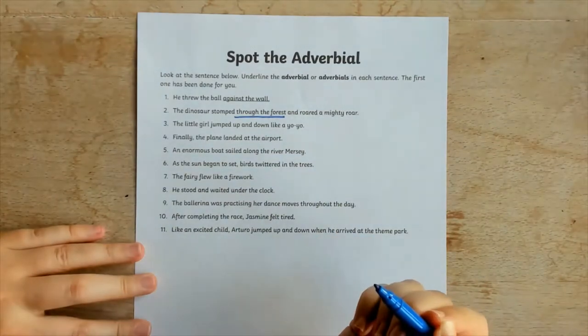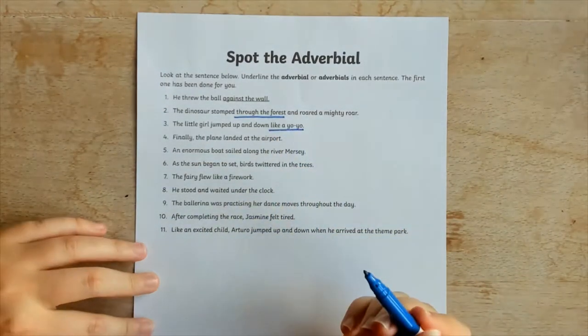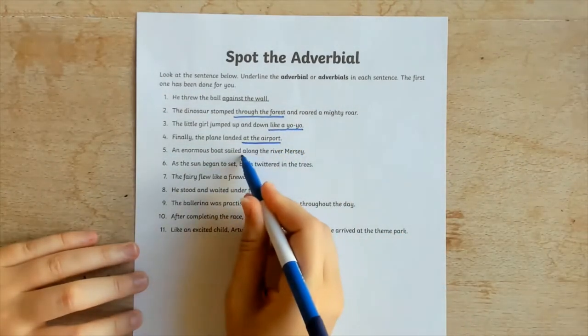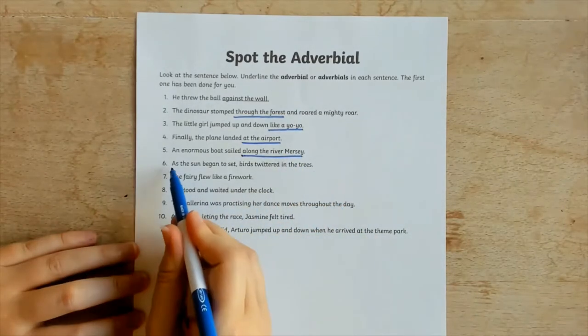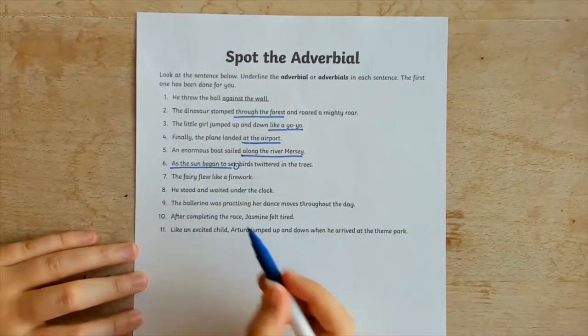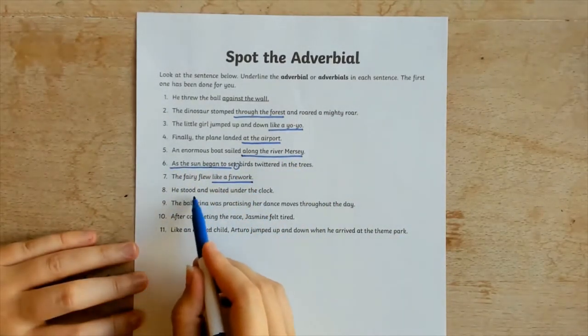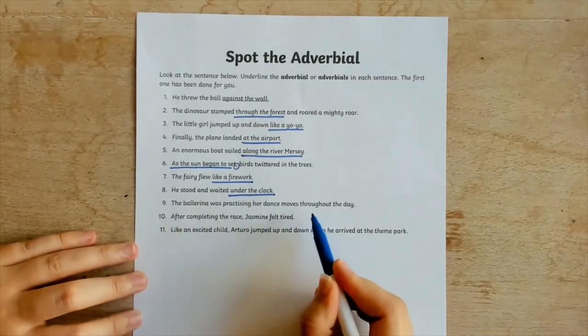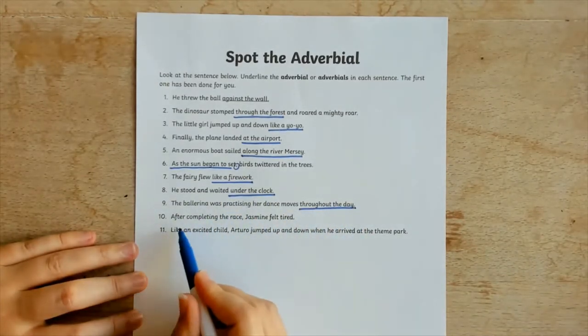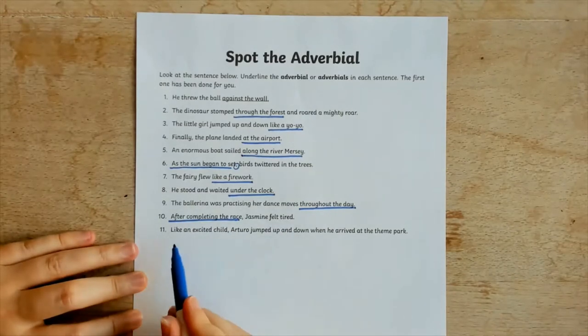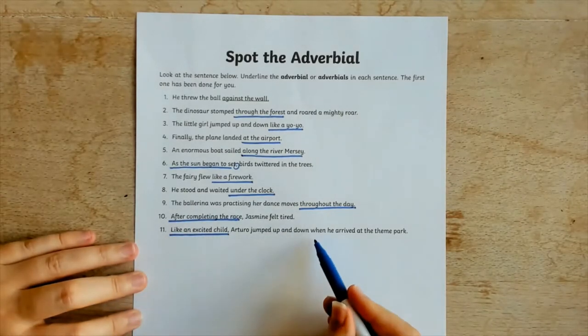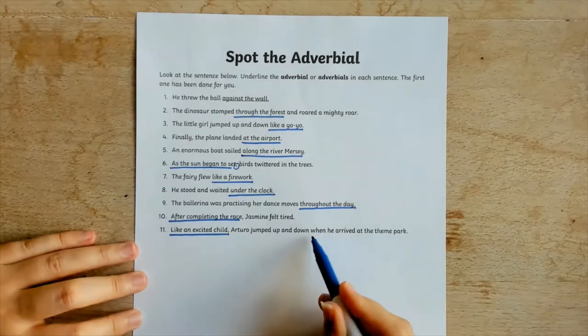Included in the worksheet pack is a spot the adverbial activity. Children must read given sentences and then identify the adverbials within them. This is a great starting activity as it ensures children know what an adverbial is. There is a handy definition at the start of every worksheet too. Know that they can be found at the start, middle and end of a sentence and there can be multiple adverbials in the same sentence.